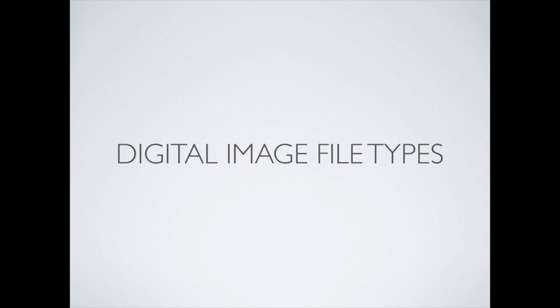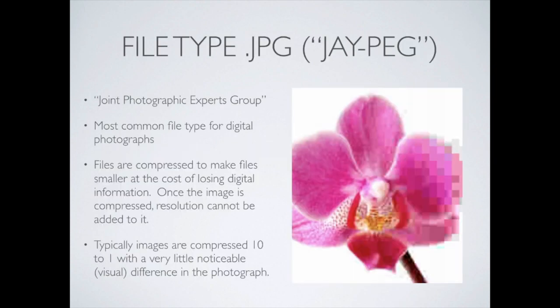Digital image file types. JPEG — the Joint Photographic Experts Group — is the most common file type for all your images and generally what comes out of everything. It's good because it's nice and compressed, giving a very small file size, but we're stripping out some of that resolution in the process. If you zoom in on a JPEG at some point, it's going to start to get pixelated. Typically images are compressed about 10 to 1 without noticing too much — a 10 megabyte file photograph shrinks down to 1 megabyte.